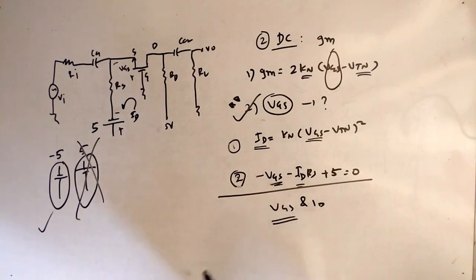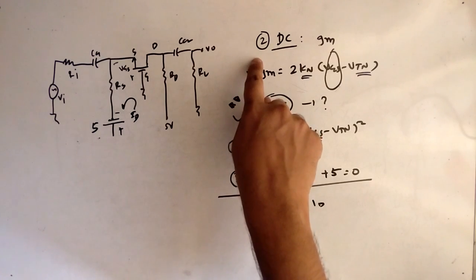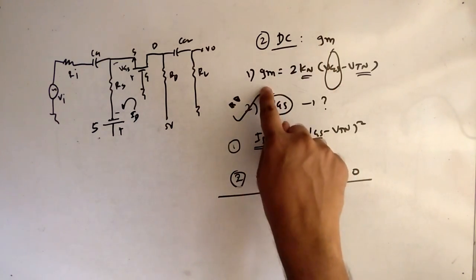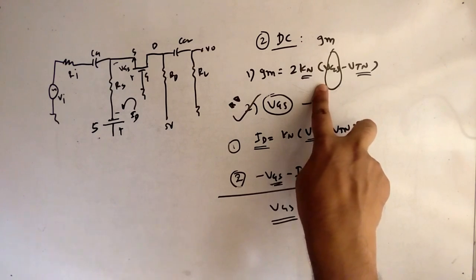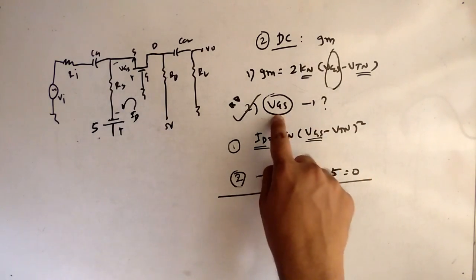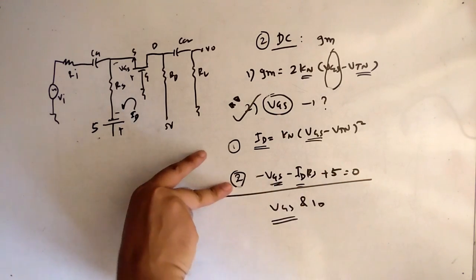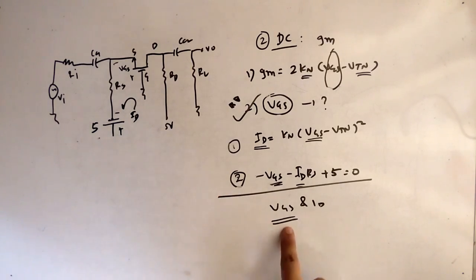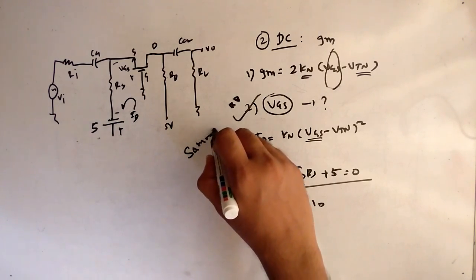Quick recap of DC analysis: we need to find gm, and gm requires Vgs — the only unknown. Vgs cannot be found directly; we must solve two simultaneous equations. The first equation comes from the MOSFET saturation region: Id = kn(Vgs - Vtn)². The second equation comes from applying KVL in the circuit.